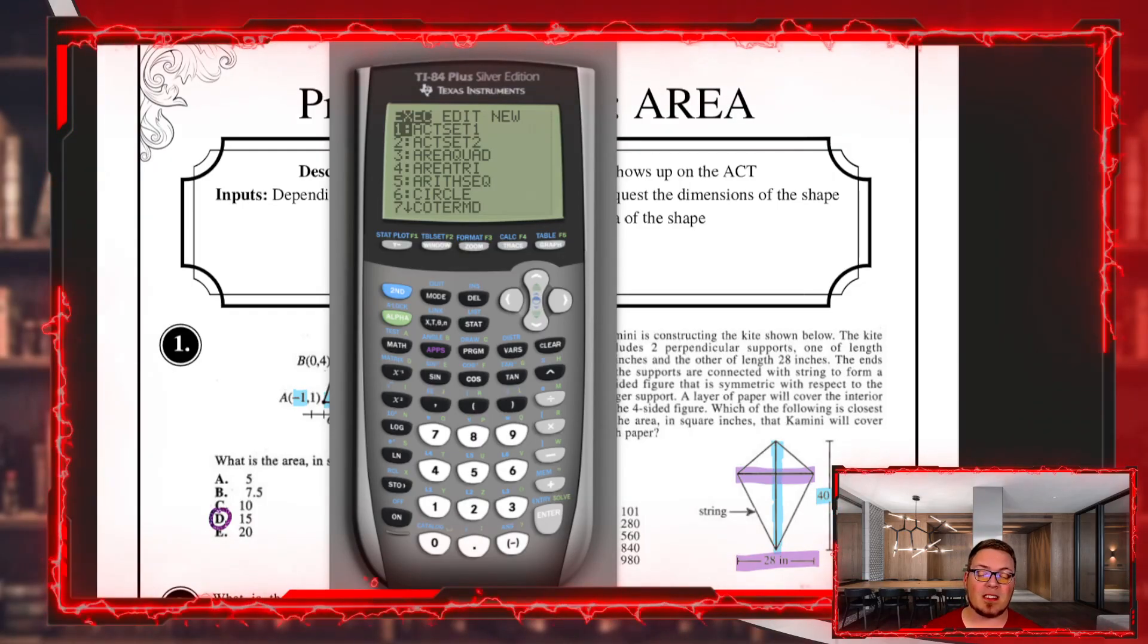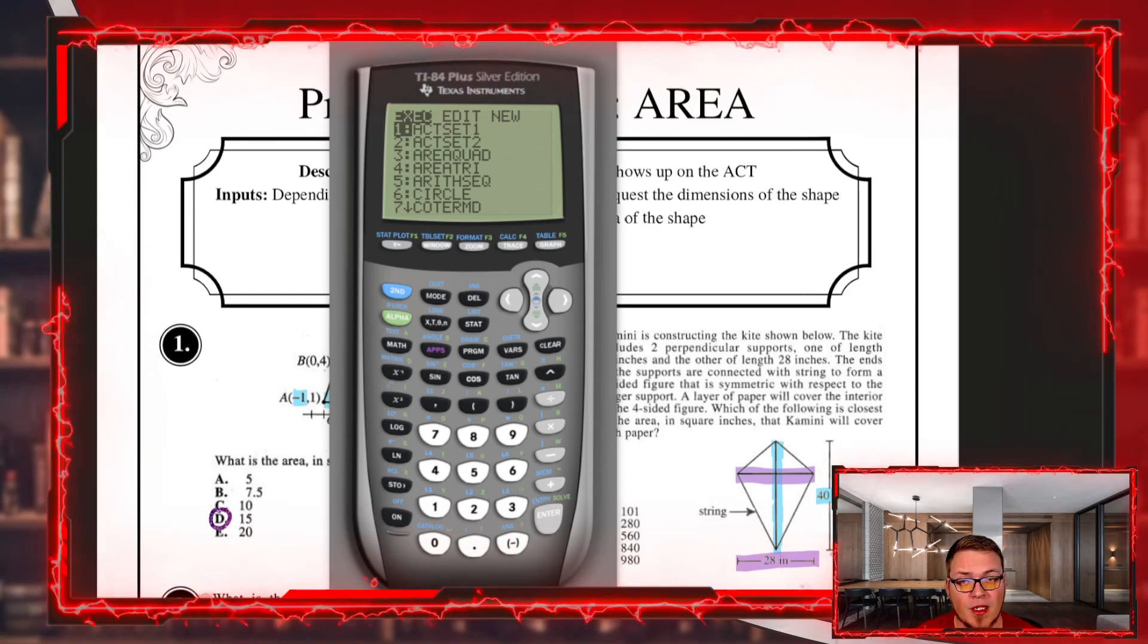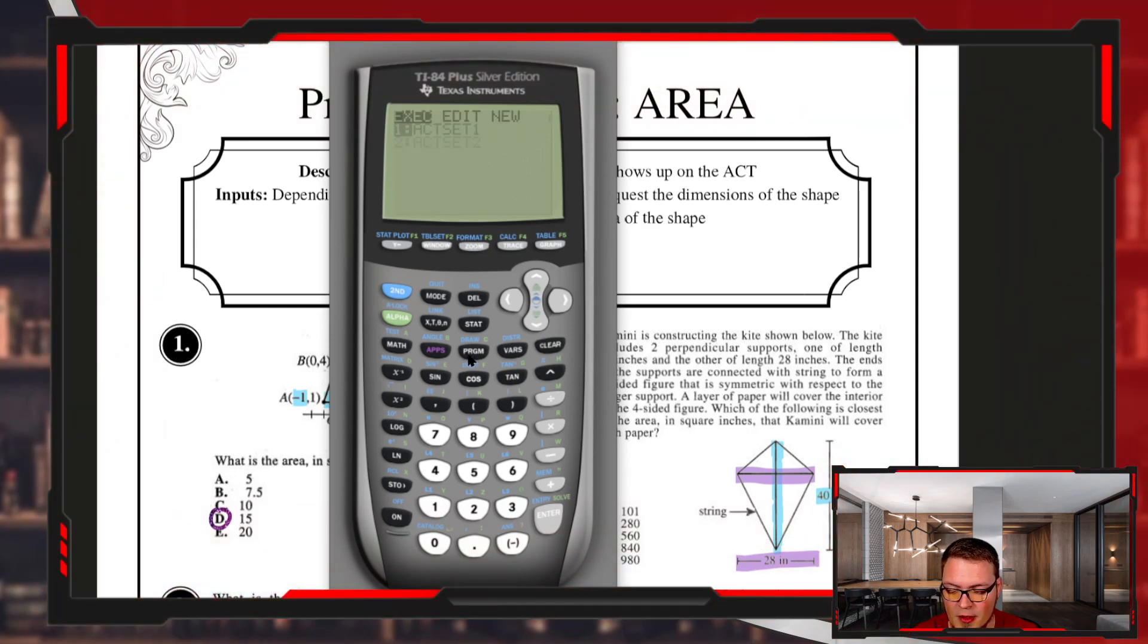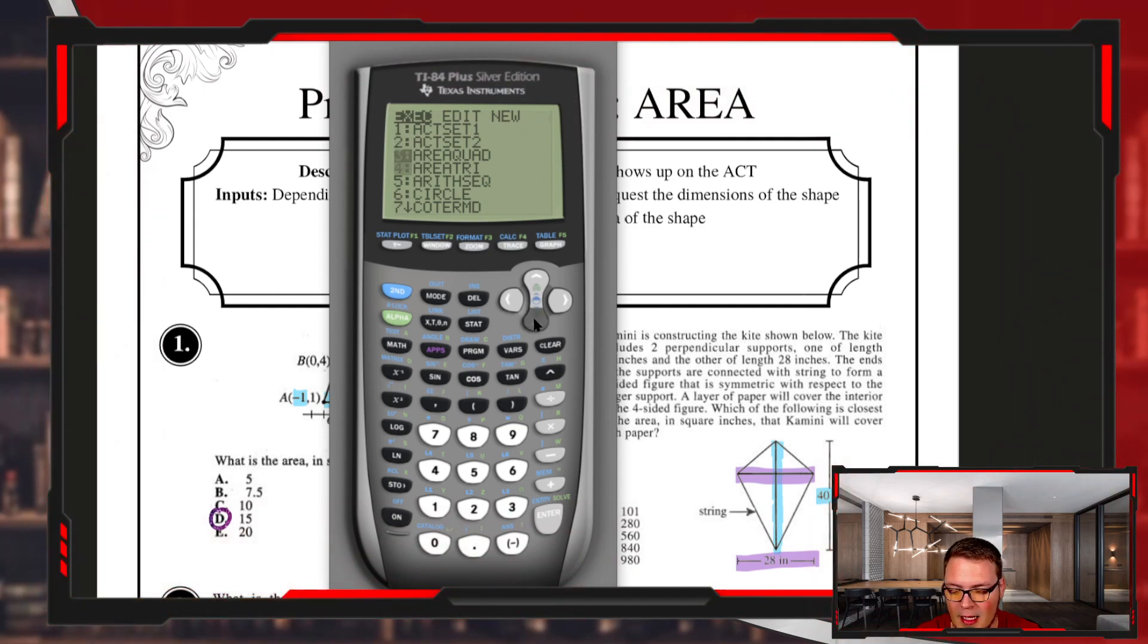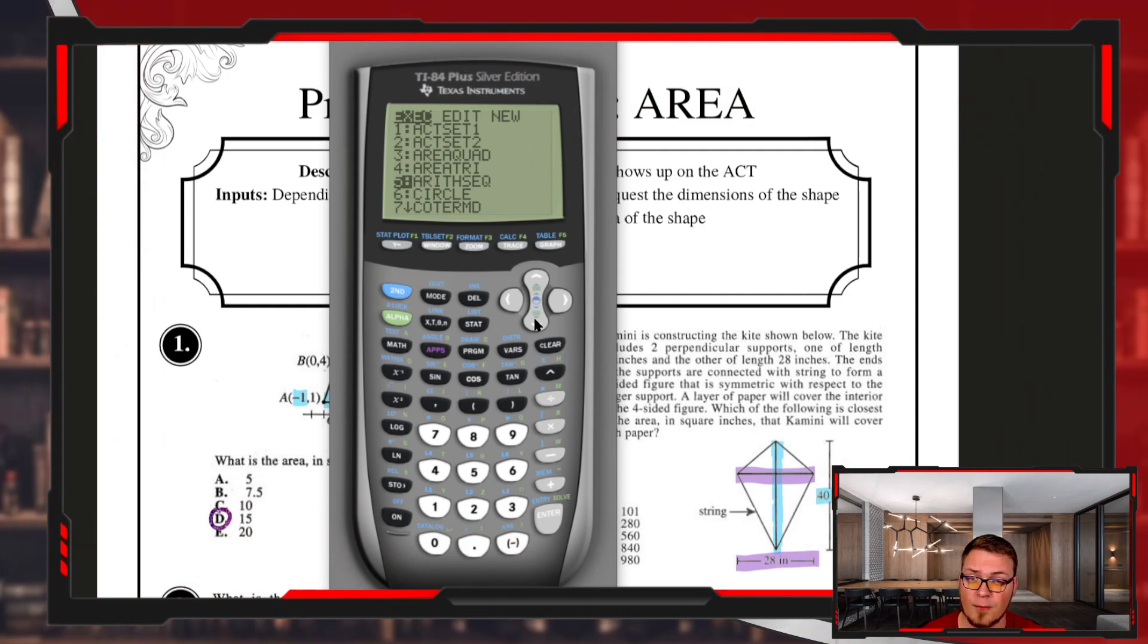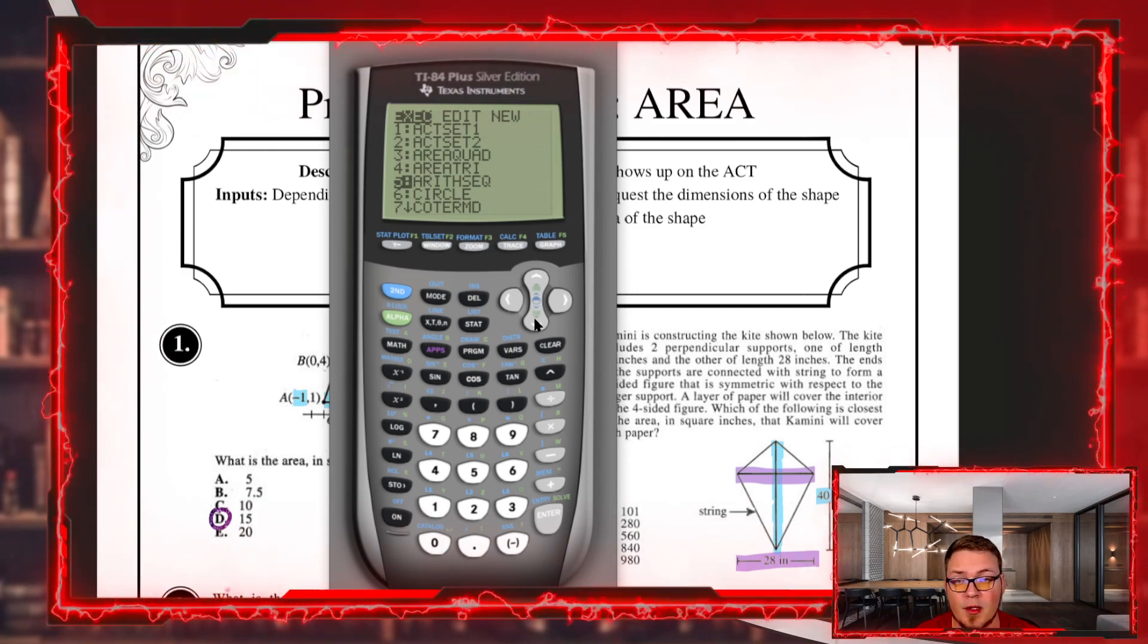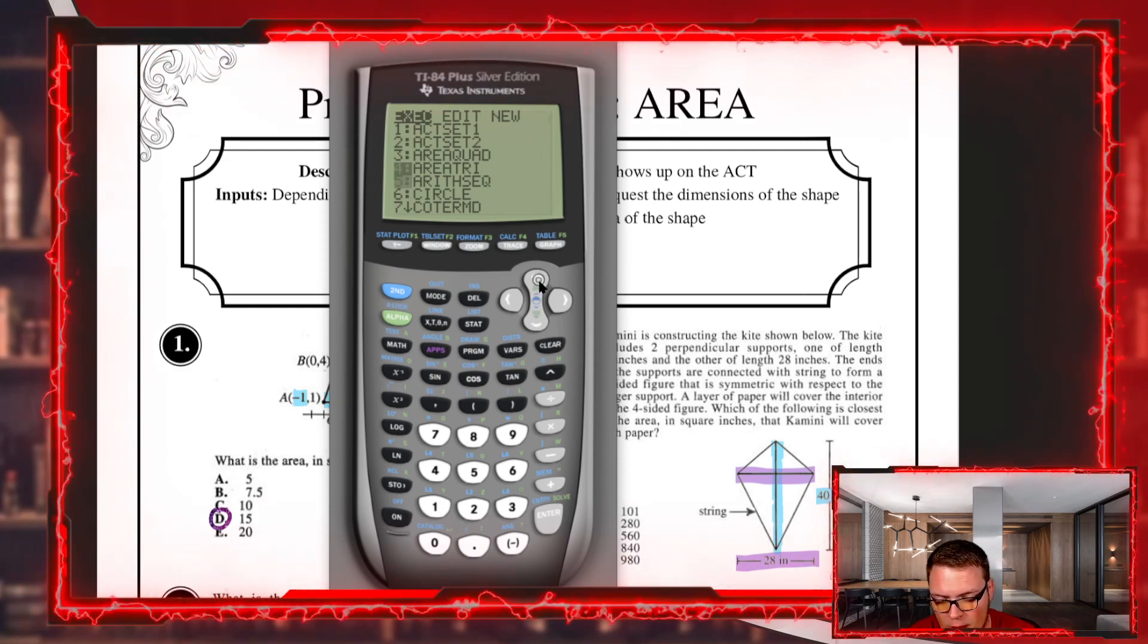Welcome to the first video of the series where we're going to learn how your calculator works. We'll be focusing on three programs for finding areas. Open your program list with PRGM. These three programs are area quad, area tri, and circle. Area quad finds the area of quadrilaterals or four-sided shapes. Area tri finds the area of triangles. Circle does almost anything with circles—it's a pretty cool program.